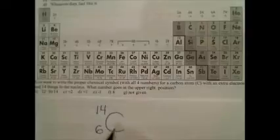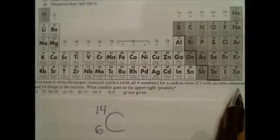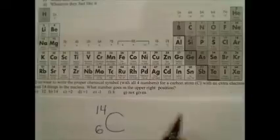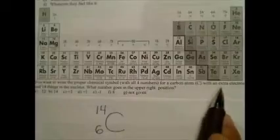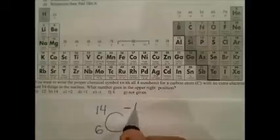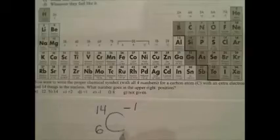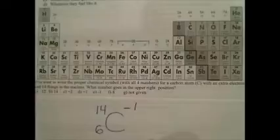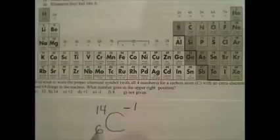We are also told that it has an extra electron, meaning one more electron than normal. Normally it has the same number of electrons as protons, so normally it has six electrons. But it says we have an extra one — one more negative electron than our positive protons. So we have a net balance of negative one charge. If we have a total of 14 things in the nucleus and six of them are protons, we subtract and get eight neutrons.